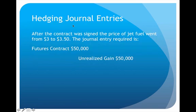How do we account for this? Say that immediately after this contract was signed, the price of jet fuel went from $3.00 to $3.50 — a difference of $0.50. When you consider all the gallons we're required to buy, that's going to be a difference of $50,000. So we will debit Futures Contract for $50,000 to increase the value of the contract, and show an unrealized gain of $50,000, because if I exercise the contract right now I would make $50,000. It's also possible to lose money on these contracts — in that case, losses would be recorded as a debit.